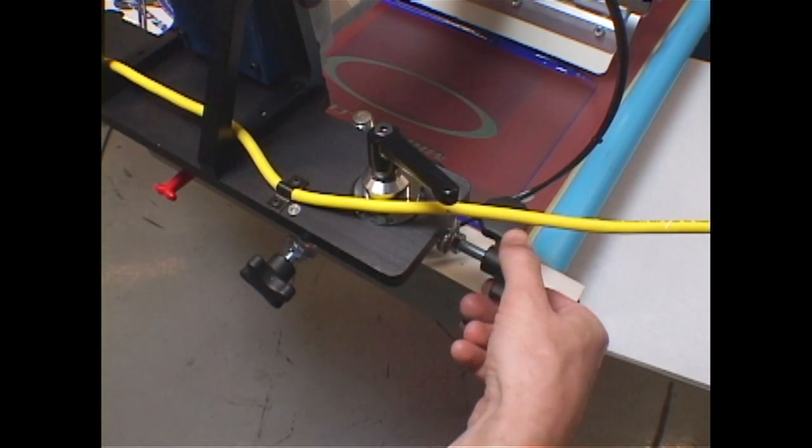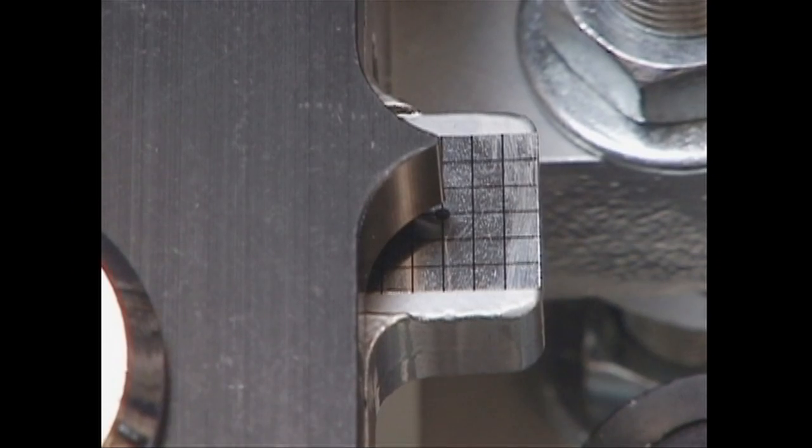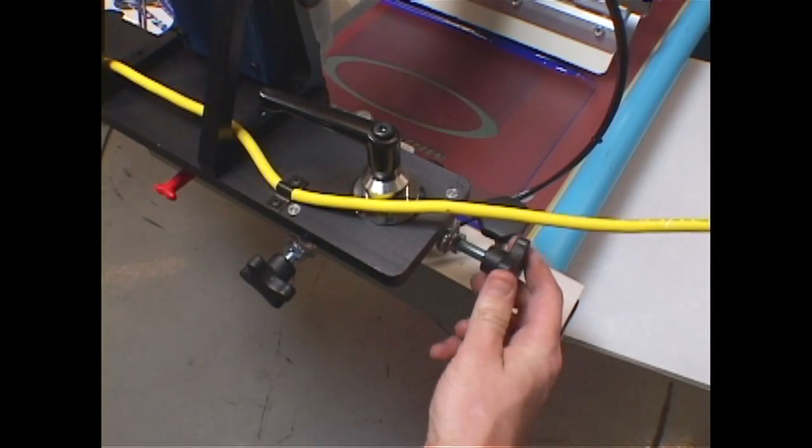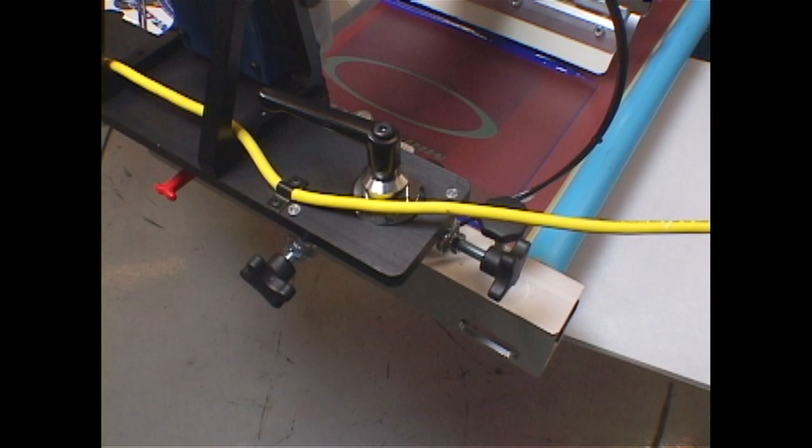When adjusting the front micro-adjusters, unlock the rear frame holder to allow the frame to move freely during adjustment. Be sure to lock down the rear frame holder when you're finished.